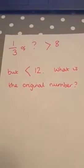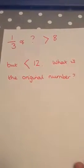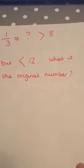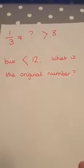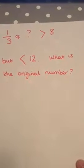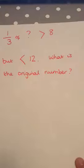My second problem: one third of a number, which I'm going to call question mark, is greater than 8, so it's bigger than 8, but it is smaller than 12. What is the original number?